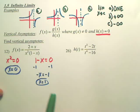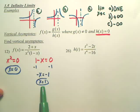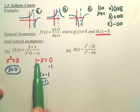Now, those are possible locations of vertical asymptotes. That's where the bottom equals zero.